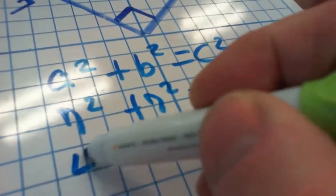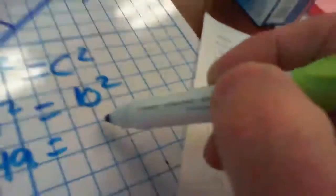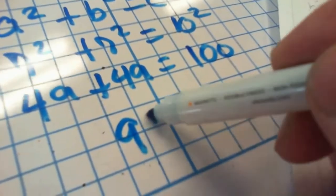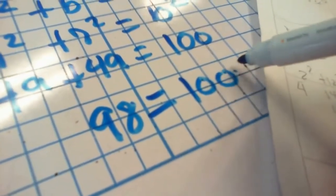Well, 7 times 7 is 49, and 10 times 10 is 100. Uh oh. 49 plus 49 equals 98, and 98 does not equal 100 does it?